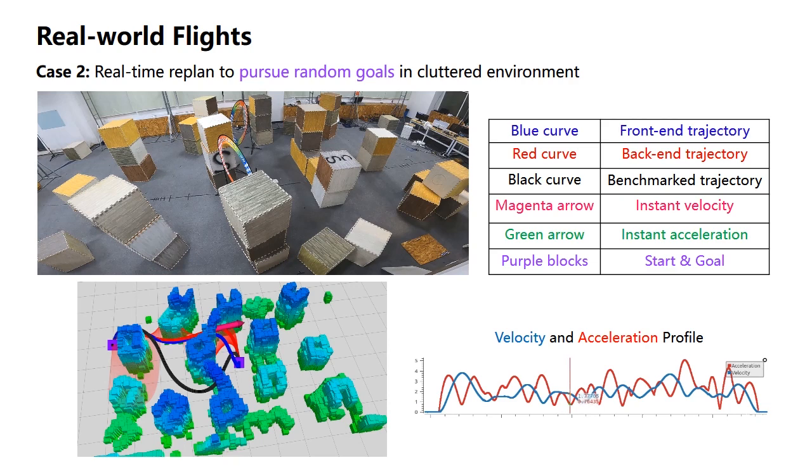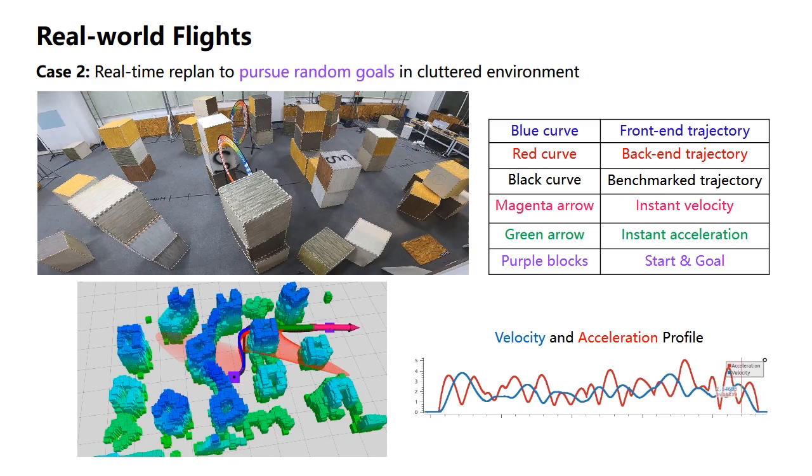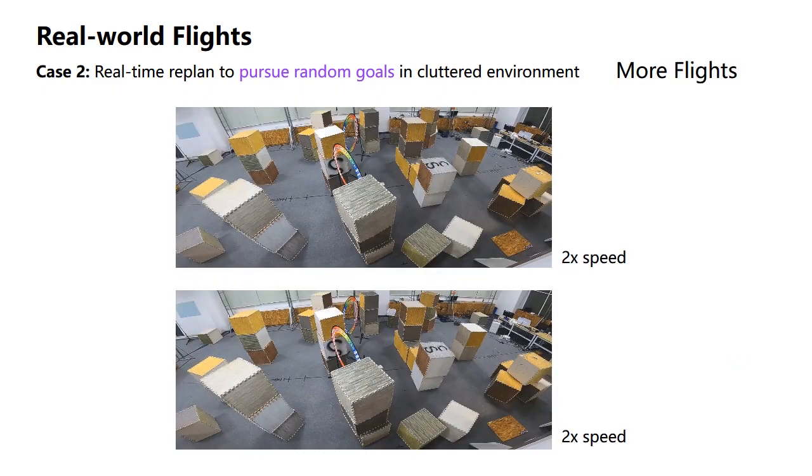A user randomly set goals for the quadrotor to pursue in the middle of flight with non-zero initial velocity and acceleration. Given the same time budget, we generate trajectories lying under more reasonable path homotopy classes. Here are some more tests played in twice speed up.